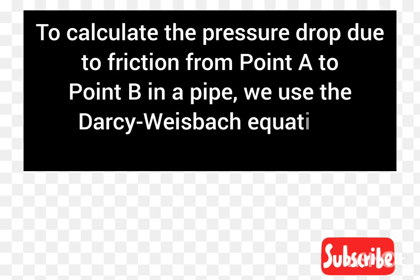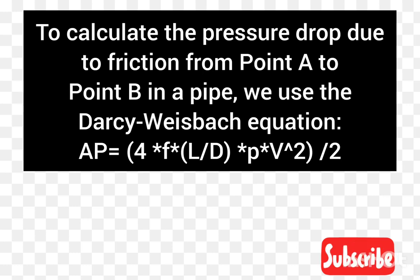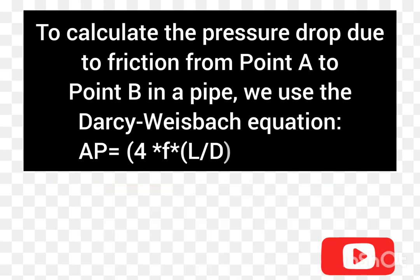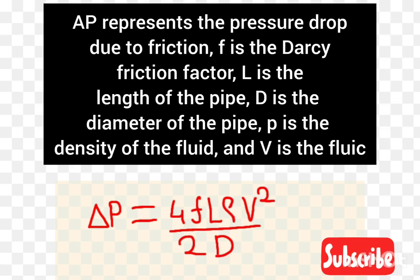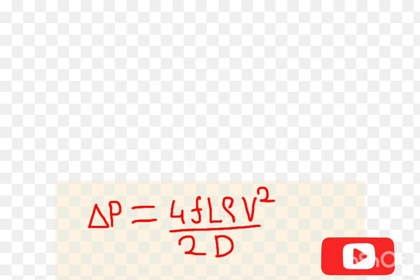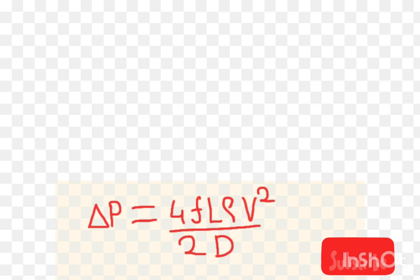To calculate the pressure drop due to friction from point A to point B in a pipe, we use the Darcy equation. The Darcy equation is: ΔP = 4 × f × L × ρ × V² / (2D), where ΔP is the pressure drop due to friction, f is the Darcy friction factor, L is the length of the pipe, D is the diameter of the pipe, ρ is the density of the fluid, and V is the fluid velocity.